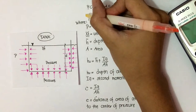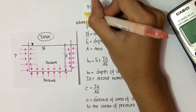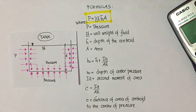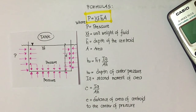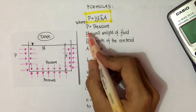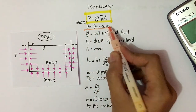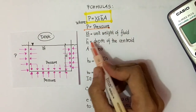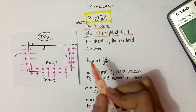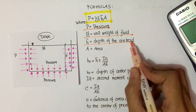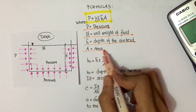The first formula is used to find pressure. Pressure is equal to gamma-fluid multiplied by H-bar multiplied by A. Where P is pressure, gamma-fluid is the unit weight of the fluid, H-bar is the depth of the centroid, and A is the area of the given surface.